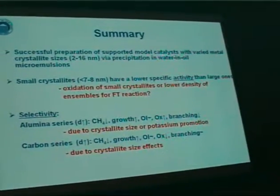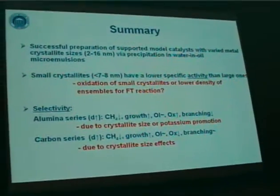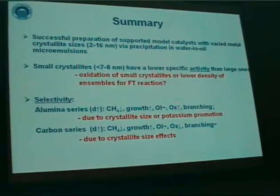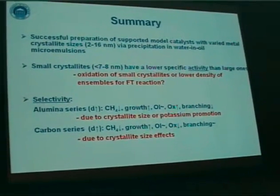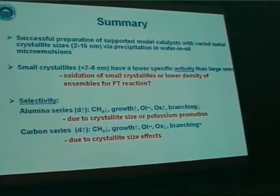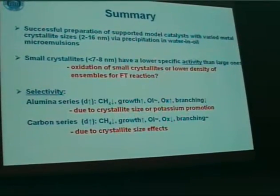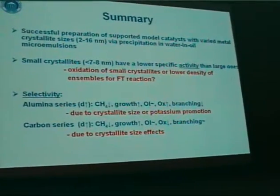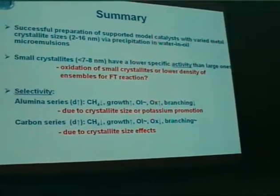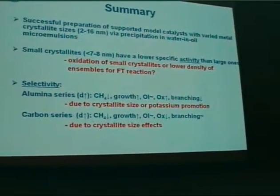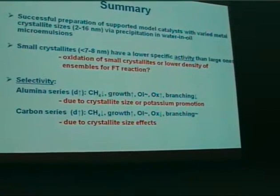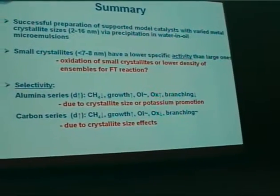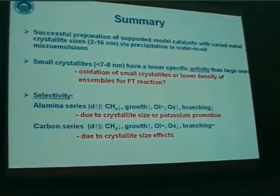To sum up: we have successfully prepared a number of model-type catalysts via precipitation in water-in-oil microemulsions. Small crystallites show lower activity than large ones, and we propose this may be due to oxidation of small crystallites or a lower density of Fischer-Tropsch active sites on those small crystallites. As for selectivity, the alumina series may be hampered by potassium promotion effects, whereas in the carbon series the decrease of methane selectivity, increase of chain growth, and increase of oxygenate formation with decreasing crystallite size may indeed reflect true crystallite size effects.